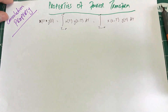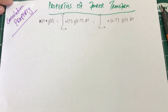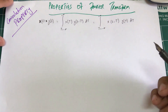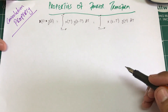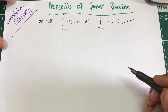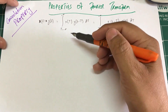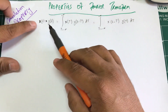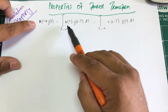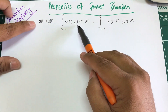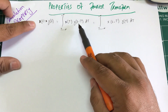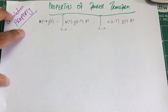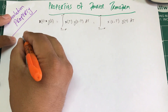Let's look at another property of the Fourier transform — the convolution property. Convolution, the way I understood and remembered it, is making multiple copies of the same signal. By definition, when you're convolving two signals, you have your signal and multiple copies of that same signal at different time durations. This is the way you rewrite this.